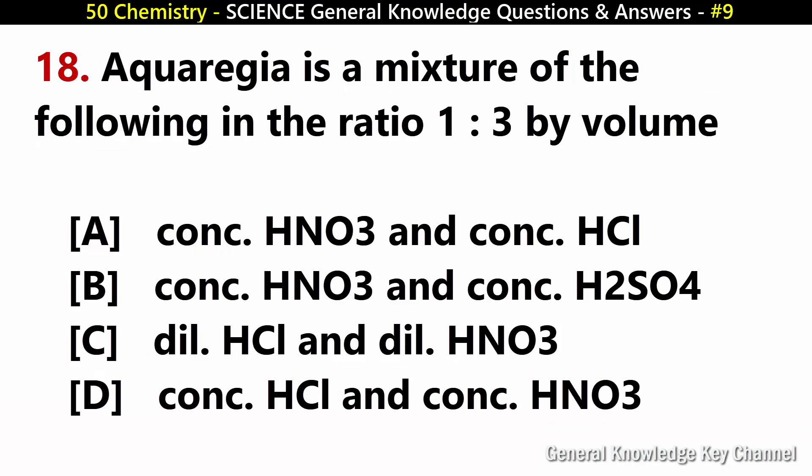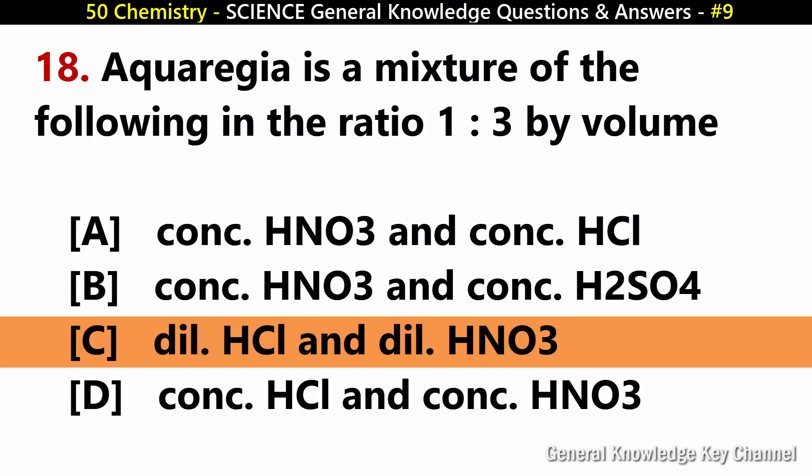Aqua regia is a mixture of the following in the ratio 1 to 3 by volume. Answer C: Concentrated hydrochloric acid and concentrated nitric acid.